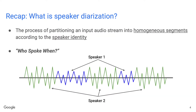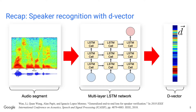Let's also have a quick recap of the basic concepts. First, what is speaker diarization? By definition, speaker diarization is the process of partitioning an input audio stream into homogeneous segments according to the speaker identity. It answers the question: who spoke when? A key component of all our speaker diarization systems is a speaker recognition neural network that produces a d-vector embedding from an audio segment.